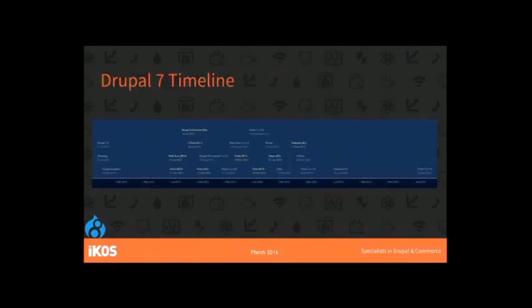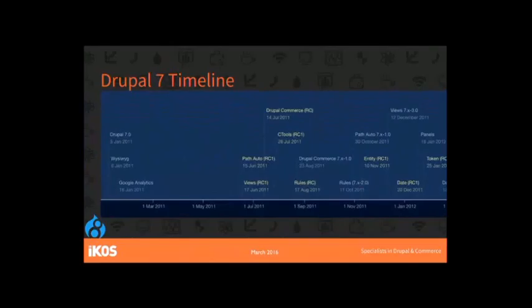It wasn't until the Views module got to a release candidate that we had mainstream adoption of Drupal 7. This timeline shows Drupal's launch up here in January, and a selection of mainstream modules we use all the time — things like WYSIWYG, Google Analytics, Drupal Commerce, Rules, and so on. The yellow indicates when they went to release candidate, and the blue indicates when they went to full release.